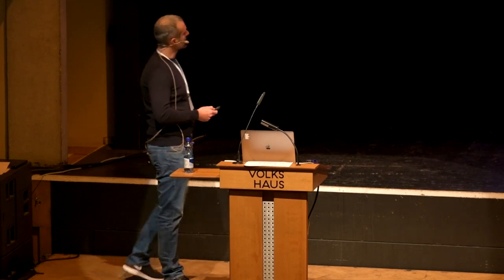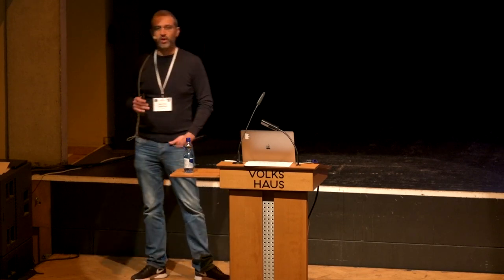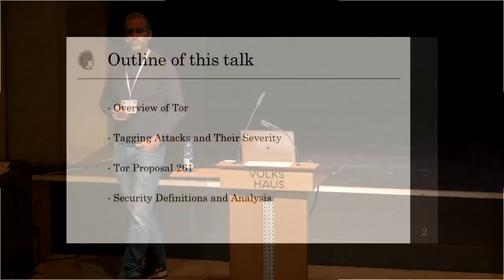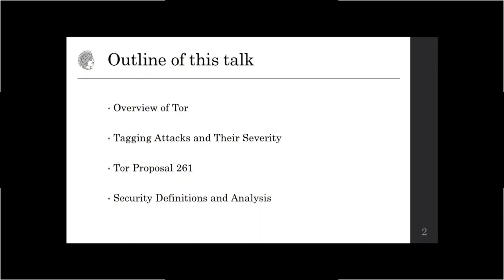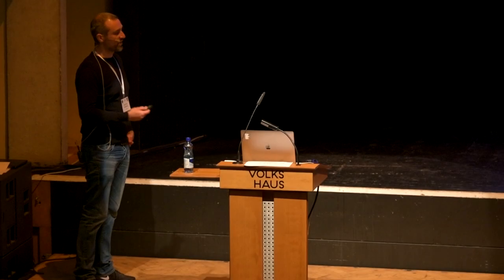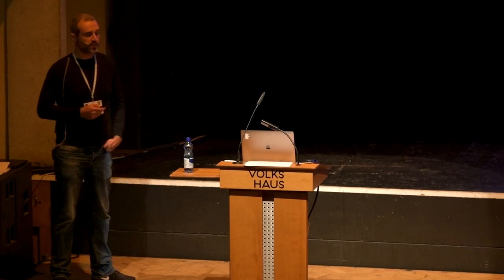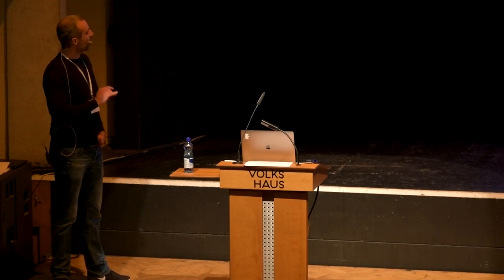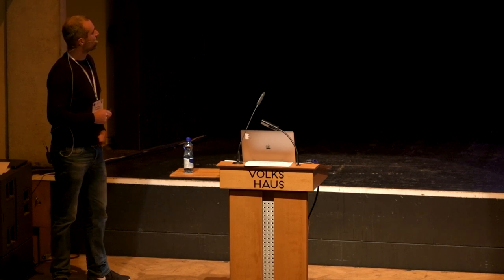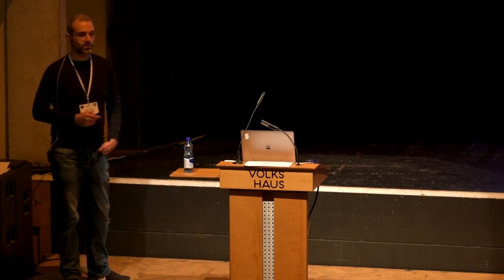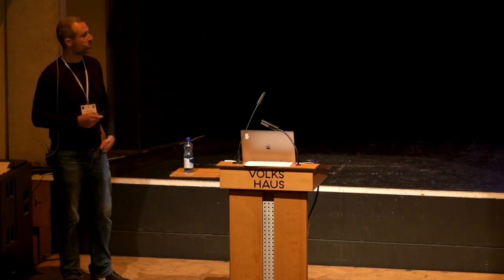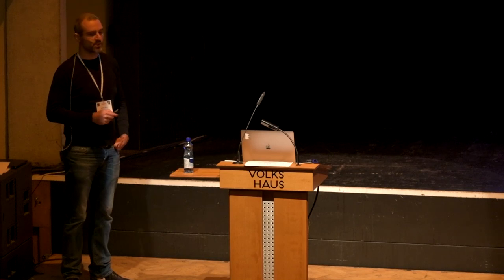I'll start this talk with an overview of how Tor works. Then I'll describe a class of attacks called tagging attacks. Then Proposal 261, which is a proposal to try to prevent these tagging attacks. And then I'll give a very high-level view of our contribution, which is the security definitions we propose and some results from our analysis.